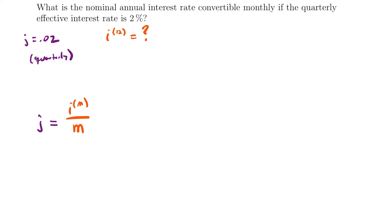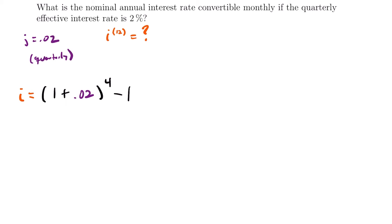Dividing a nominal interest rate convertible monthly by 12 gives you a monthly rate, not a quarterly rate — so we can't use that formula directly. Instead, we should first convert our non-annual rate to an annual rate, then use that annual rate to find the nominal rate. We have I equals (1 + 0.02) to the fourth power minus 1, since this is a quarterly rate. Plugging that into the calculator, I equals 0.08243.